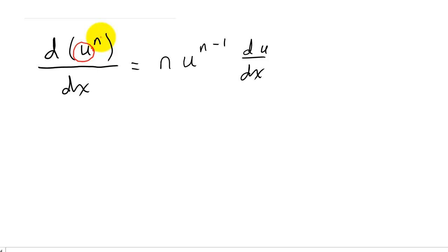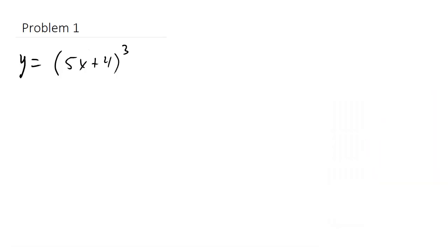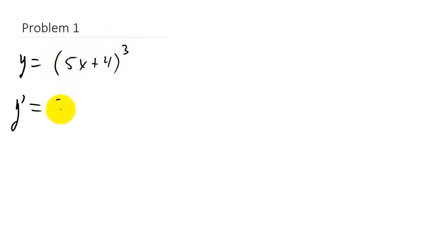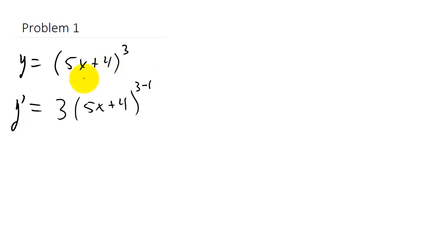Let's take a look at some examples. When we're using the chain rule here, the exponent is n, and 5x plus 4 — that's your u. Whatever's inside the parentheses is u. So the derivative: we take the exponent, bring it down in front, times 5x plus 4, and then subtract one from the exponent. Then it's times the derivative of what's inside the parentheses.